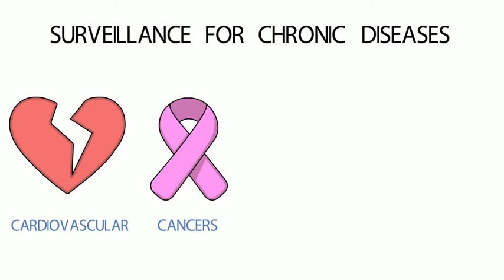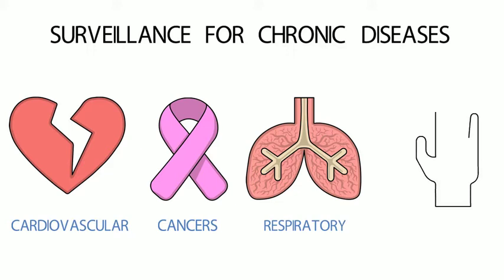The four main types of chronic diseases are cardiovascular diseases, like heart attacks and stroke, cancers, chronic respiratory diseases such as chronic obstructed pulmonary disease and asthma, and diabetes.